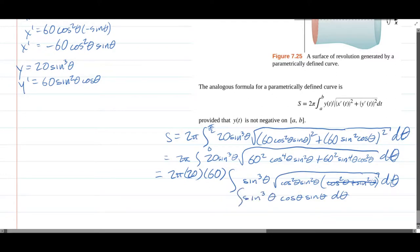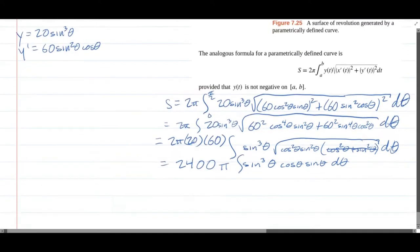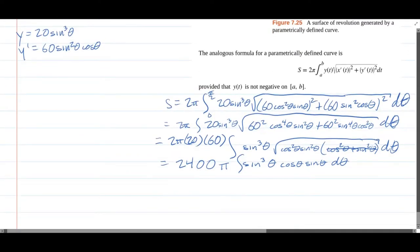And cleaning up our constants, we have 2 times 20 times 60, which is 2,400. Alright, what next?